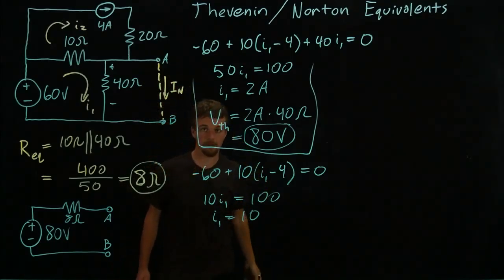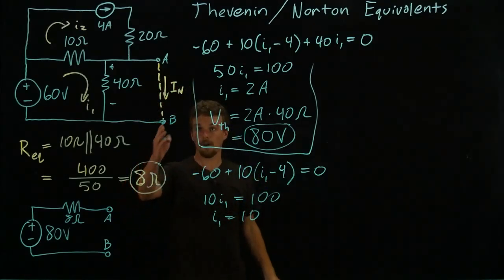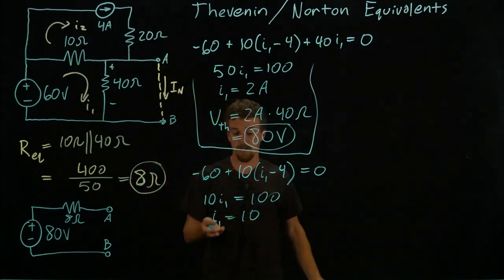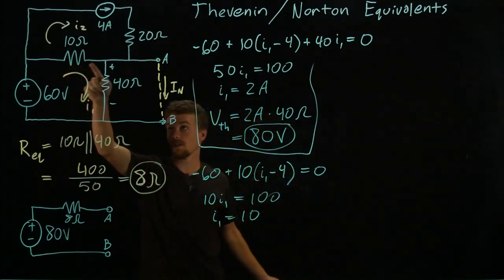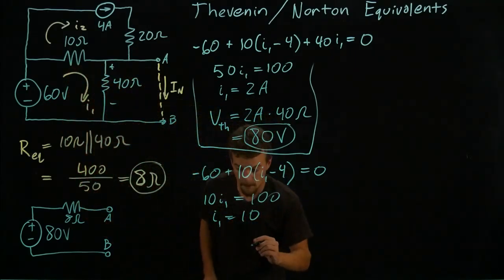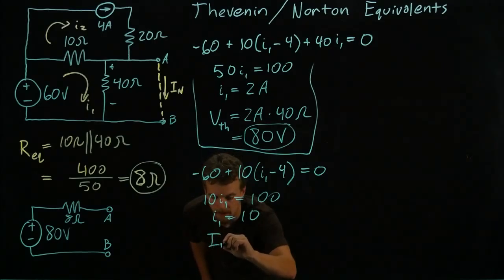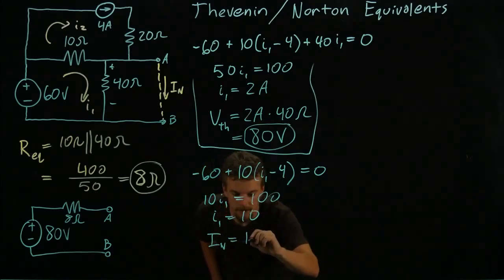all of the loop current is flowing through the short, right. So our I_Norton is I_1 because the entire amount of I_1 is flowing in there. So that says that I_Norton is equal to 10 amps.